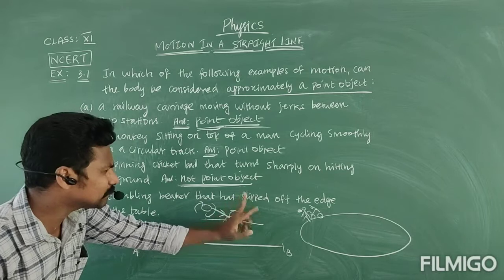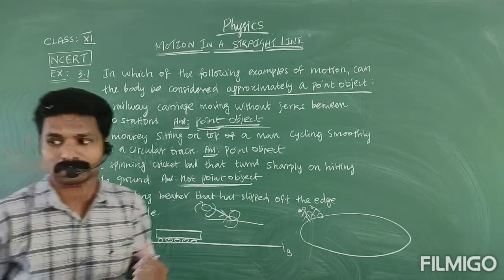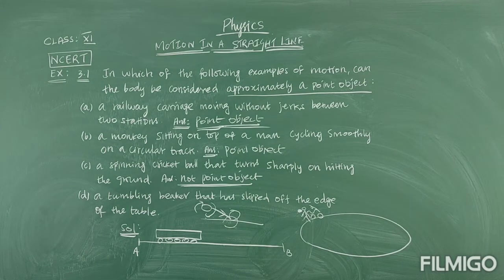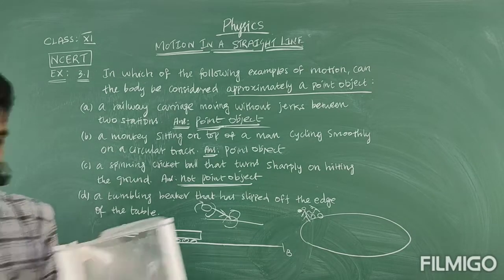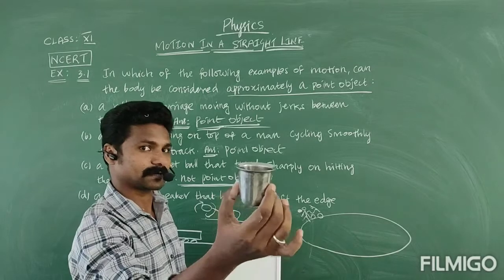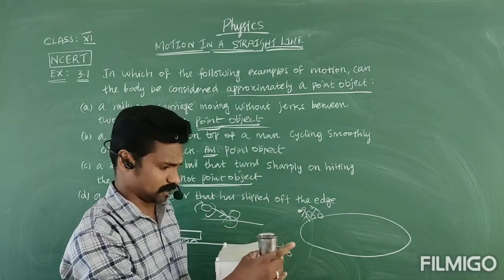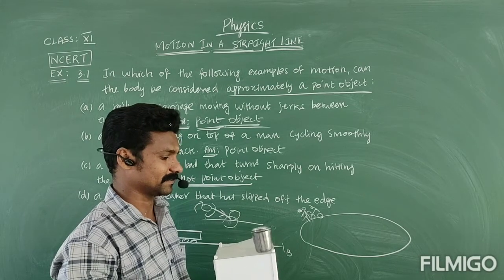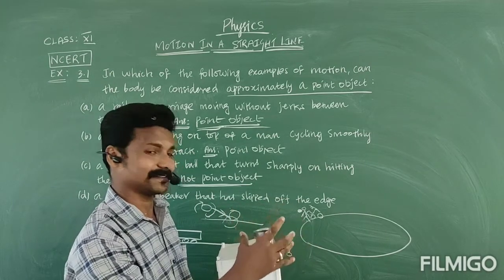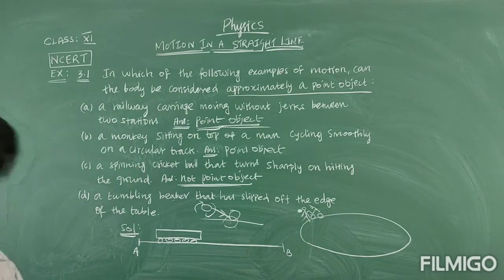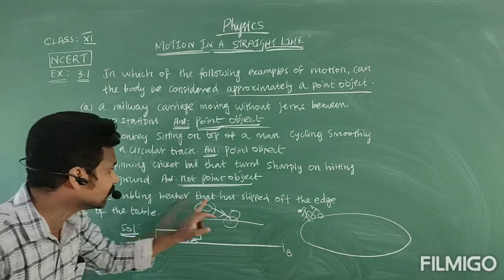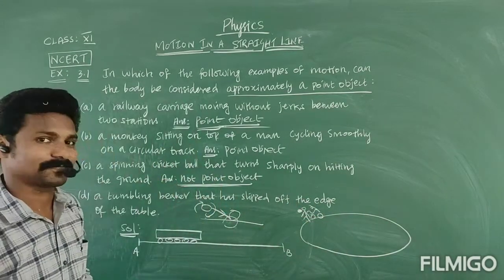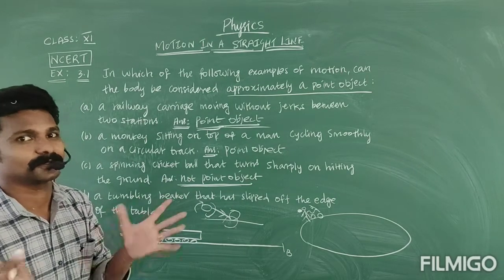A tumbling beaker that has slipped off the edge of a table. Let us take one table. The beaker is on the table edge and it will be tumbling — a little vibration, and water will be scattered in different directions. So in this situation, the tumbling beaker has slipped off the edge of the table. You cannot consider it as a point object. No, it is not a point object.